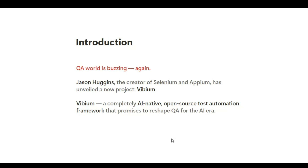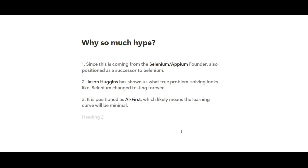The new tool is called Vibium, and it's coming into the market. This tool is going to be a completely AI-native, open-source test automation tool which is going to reshape QA for the AI era. Today we're going to talk about Vibium and discuss whatever hints Jason Huggins dropped in his YouTube video.